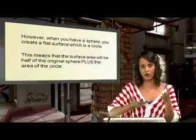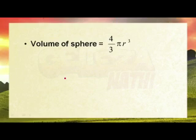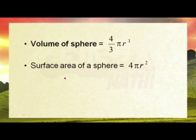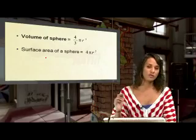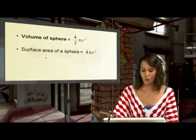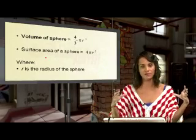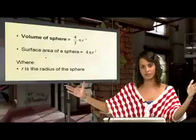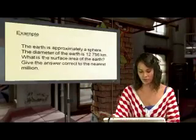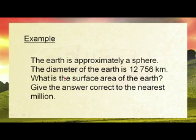The volume of a sphere formula is 4 over 3 pi r cubed. The surface area of a sphere is 4 pi r squared. Volumes are always cubed and surface areas are always squared, where r is the radius. The earth is approximately a sphere. The diameter of the earth is 12,756 kilometers. What is the surface area of the earth? Give the answer correct to the nearest million.